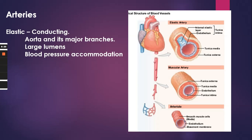These elastic arteries play a role in blood pressure accommodation — they are able to withstand and smooth out large fluctuations in blood pressure. When the heart contracts and squeezes blood out of the ventricles and into those arteries, the arteries have to expand some to take on that blood. With every heartbeat forcing blood into the arteries, they must have some give, be able to stretch and take on that blood. Having those thick walls helps to accommodate that.